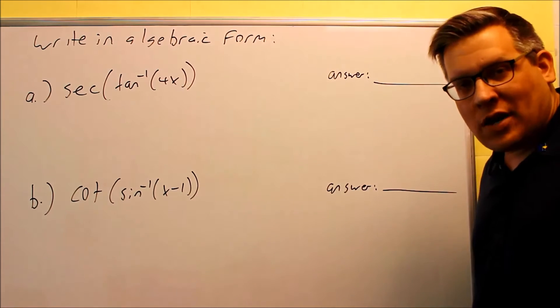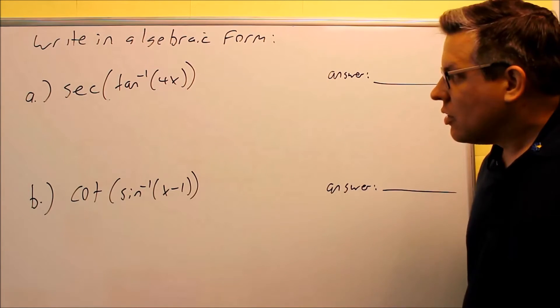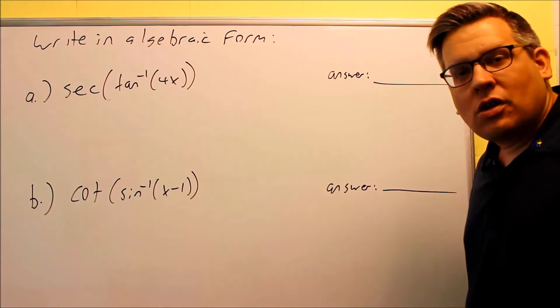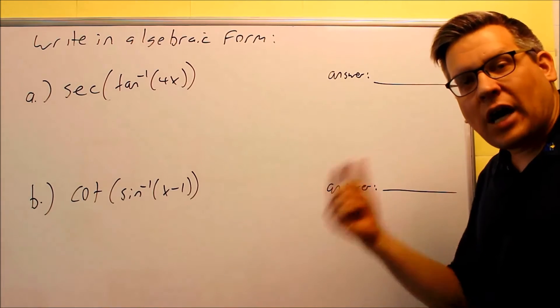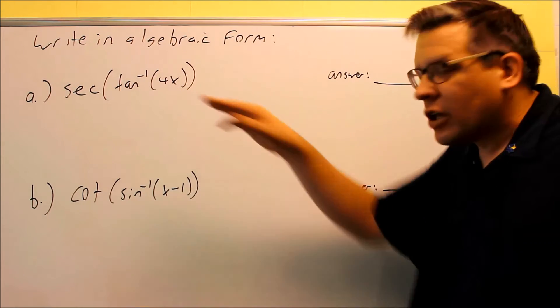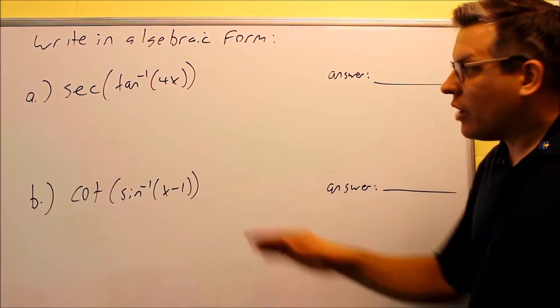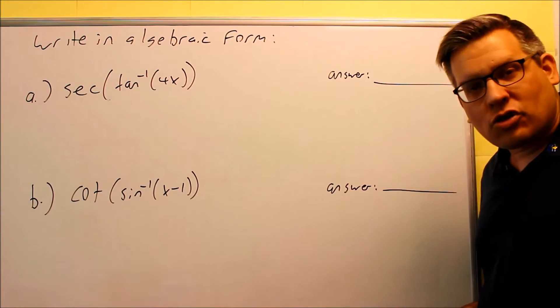Now, I should mention that the instructions for this problem will tell you specifically assume x is positive. That's important because we know that inverse tangent, you can get angles between negative pi over 2 and pi over 2, and so if we know that x is positive, that means that the angle has to only be in the first quadrant.